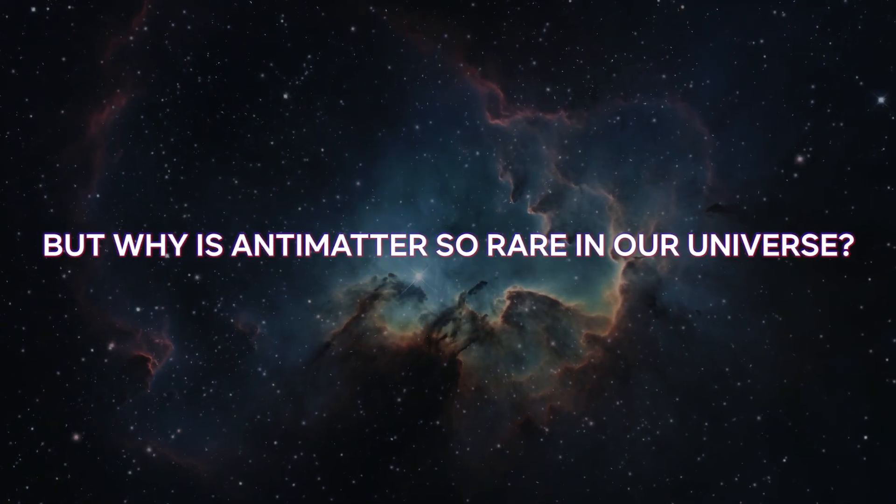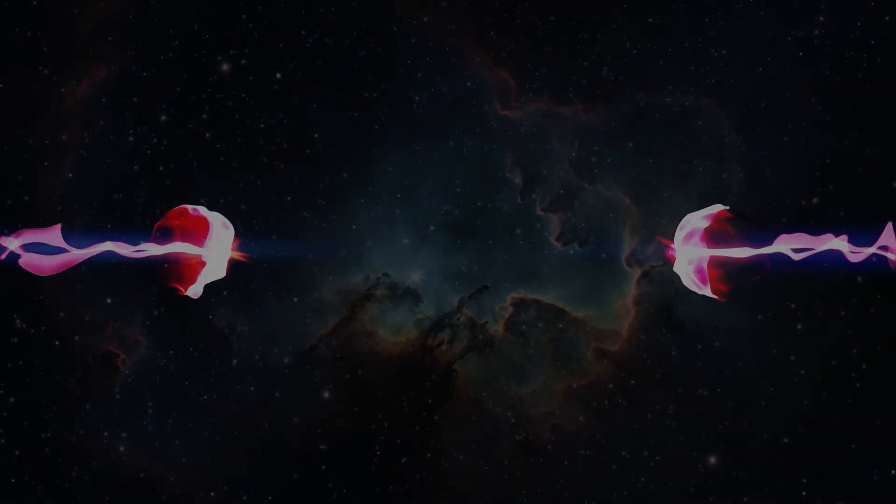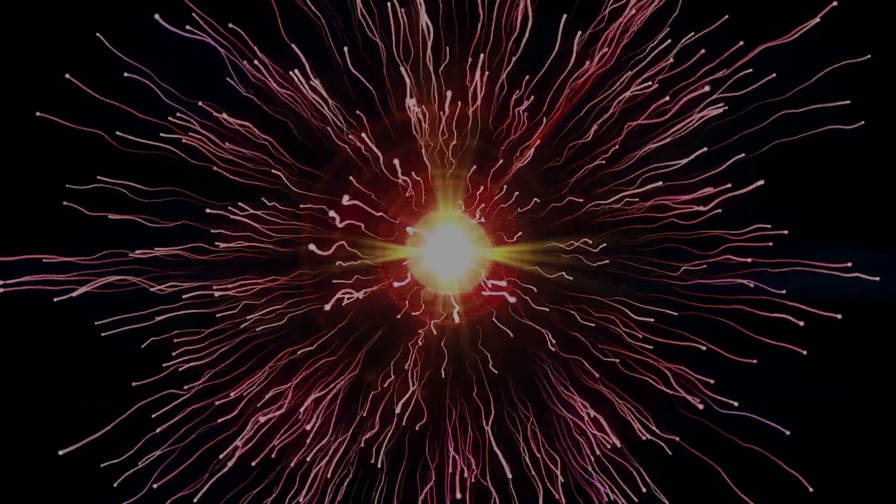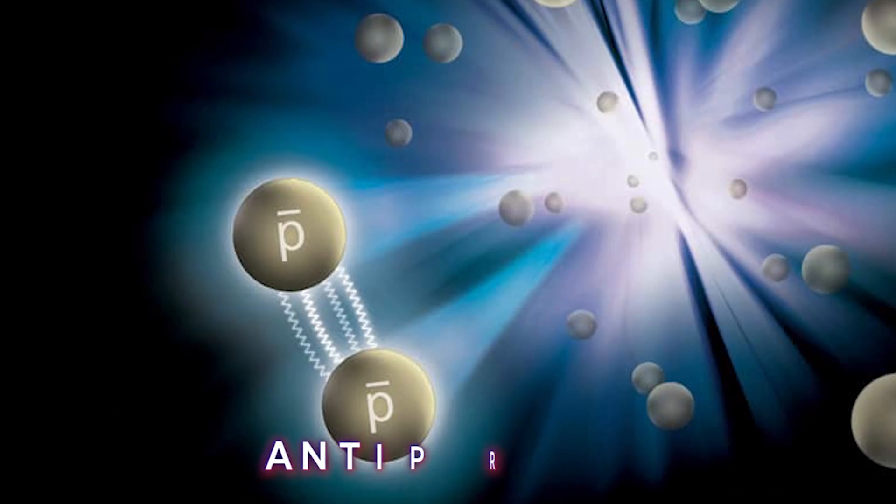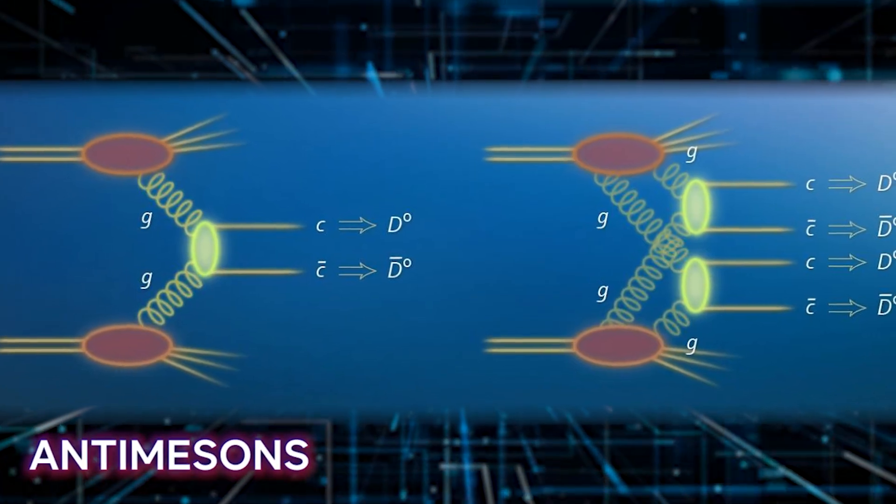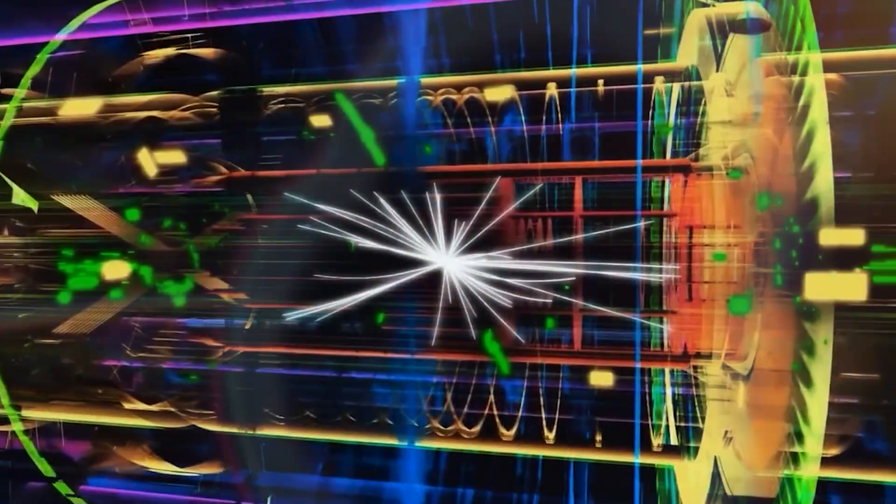But why is antimatter so rare in our universe? The answer lies in the fact that it is produced through unusual nuclear reactions that yield only minuscule amounts. The antimatter we manage to obtain consists mainly of subatomic particles such as positrons, antiprotons, antineutrons, and anti-mesons. Anti-hydrogen, the antimatter counterpart of hydrogen, has been created and studied in laboratories, albeit under highly challenging conditions that require complete isolation to prevent annihilation in a burst of gamma rays.